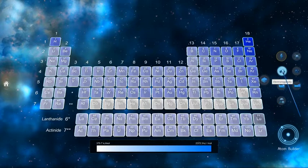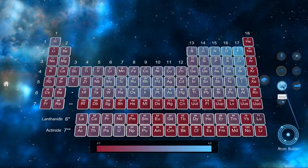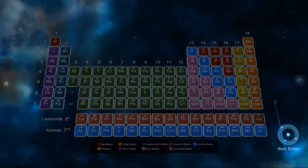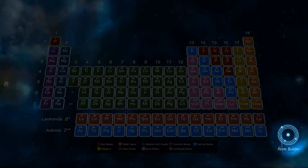We can see elements by ionization energy, electronegativity, electron group, and more. This is the atom builder, but we'll get back to that in just a moment.